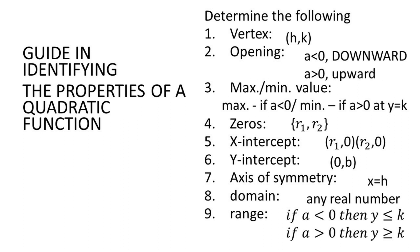K comes from the Y-coordinate of our vertex. In identifying zeros, we have R₁ and R₂. The x-intercepts are (R₁, 0) and (R₂, 0). The y-intercept is (0, B). The axis of symmetry is X equal to H, where H comes from the X-coordinate of our vertex. For the range: if a is less than 0, then Y is less than or equal to K; if a is greater than 0, then Y is greater than or equal to K.